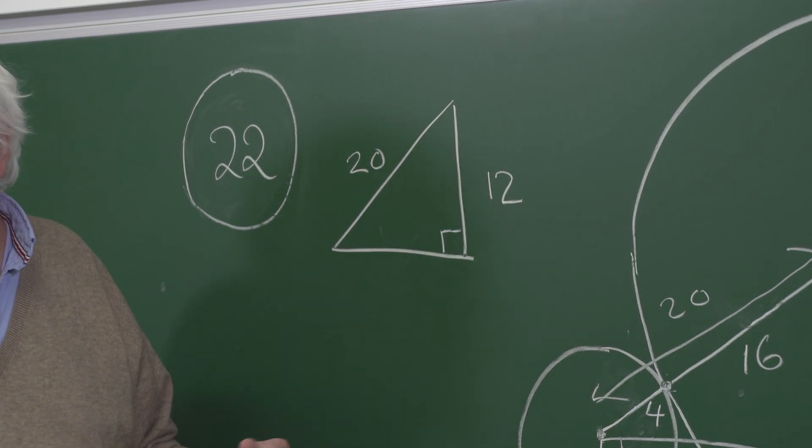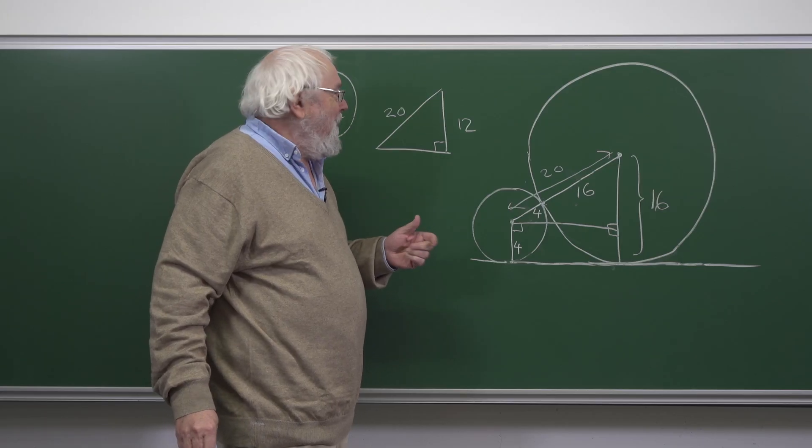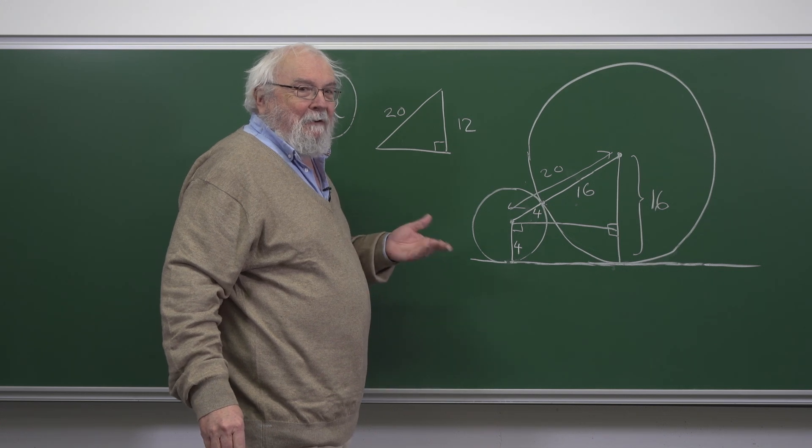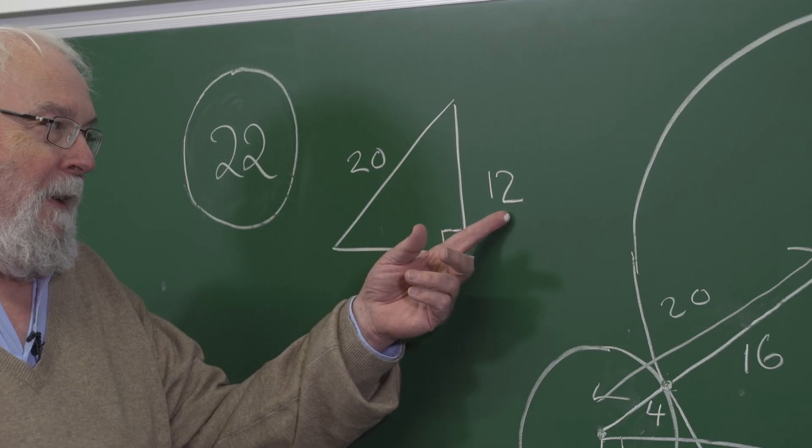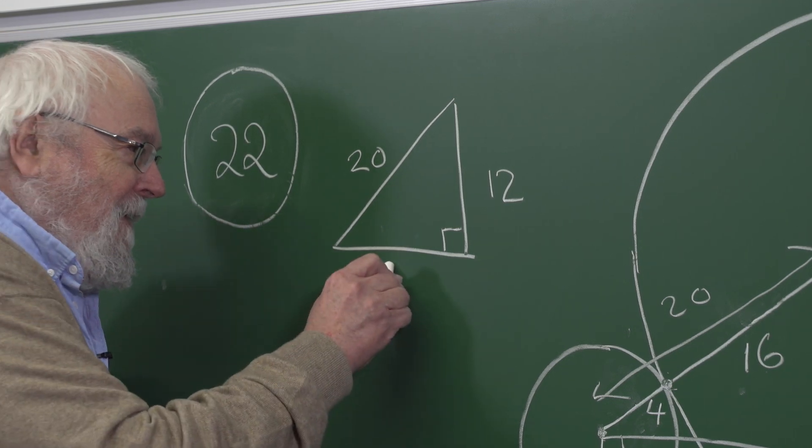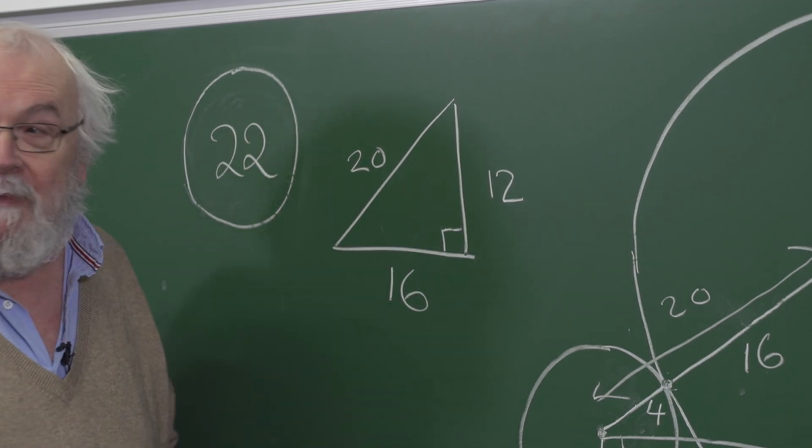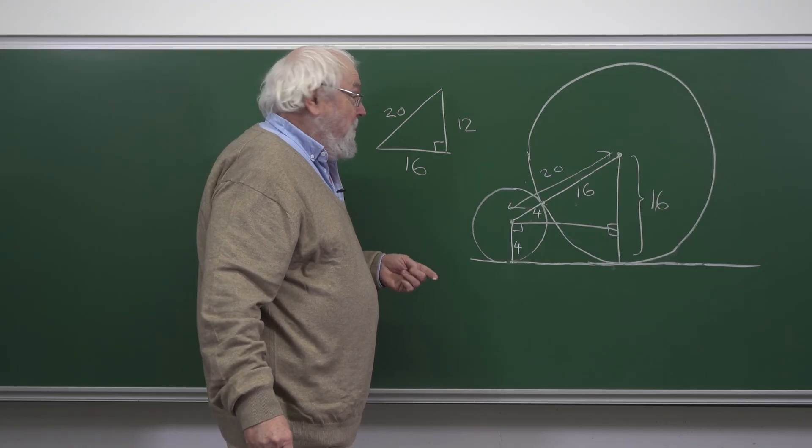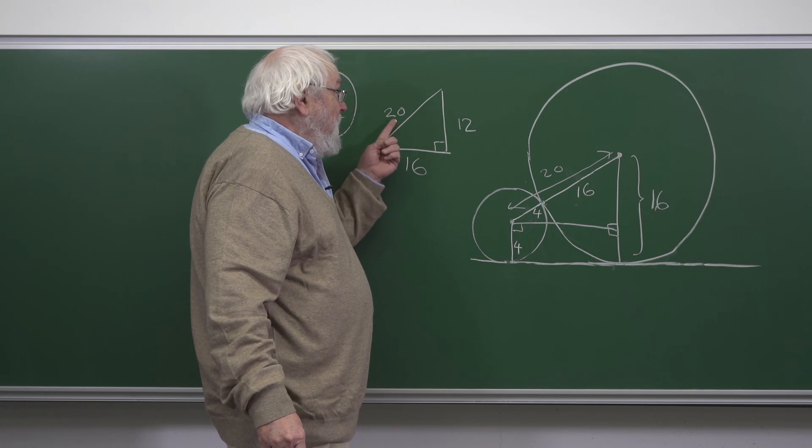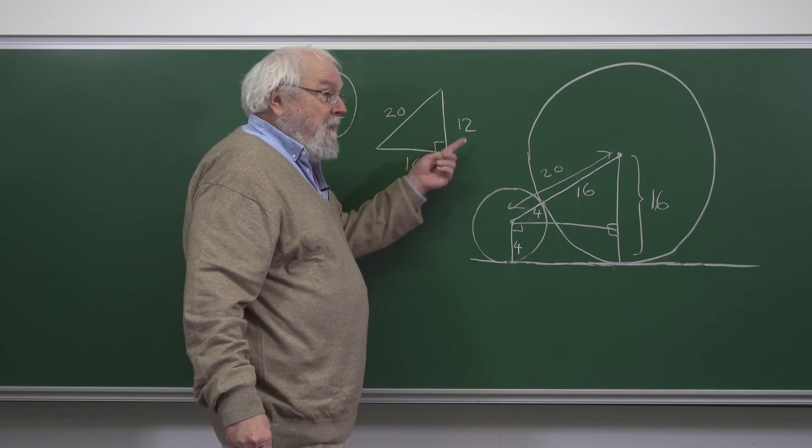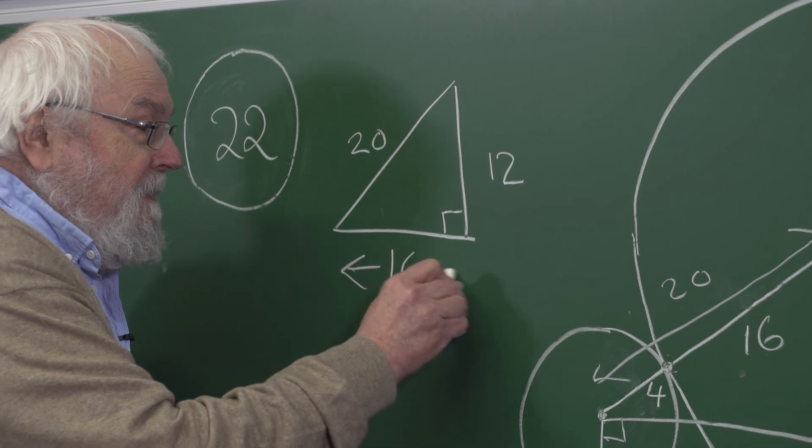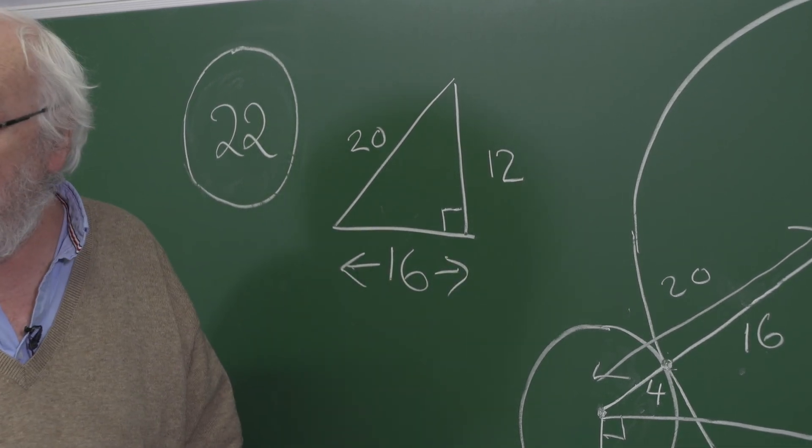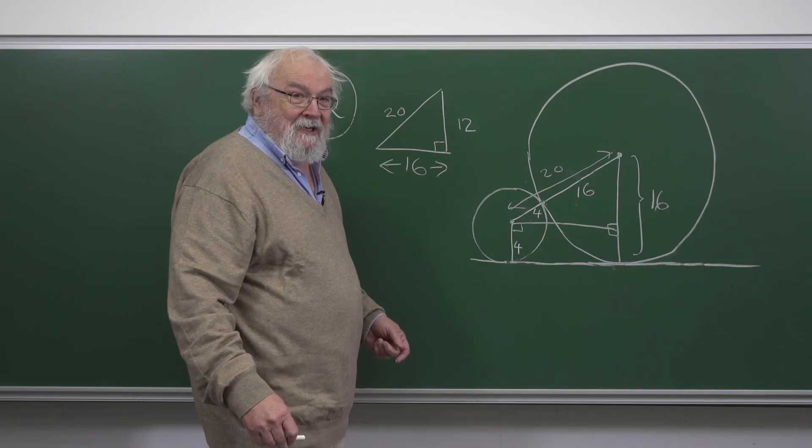Now this is a disguised version of a 3-4-5 triangle scaled up. You take 3-4-5 and multiply the numbers by 4, you get 12-16-20. If you don't believe that, what you can do is just work out 20 squared minus 12 squared and then take the square root. Either way, that distance is 16, and that's what we're after. So the answer is D.